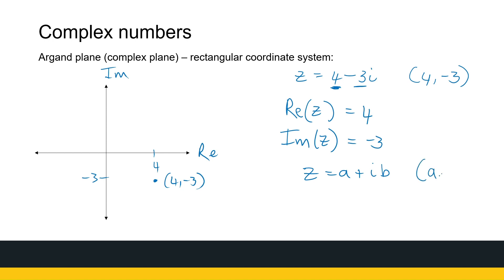Every complex number can be looked at as an ordered pair made up of two parts, and they are represented on the Argand plane similarly to ordered pairs that we know.